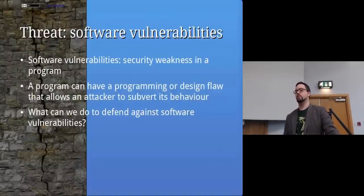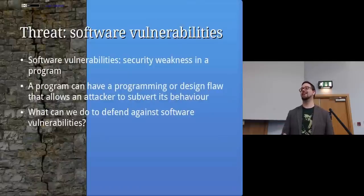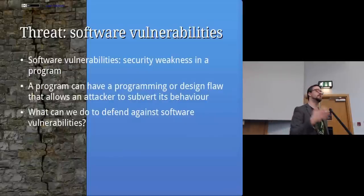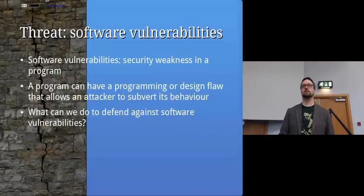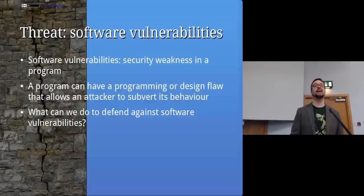Another threat is software vulnerabilities — security weaknesses in a program where the author made a mistake unintentionally. For example, a programming mistake in a version of Windows or Office that someone can exploit to gain extra access. There are examples in pretty much every operating system. An old, unpatched version of Windows can be accessed remotely quite easily. The defense is updates and patches.